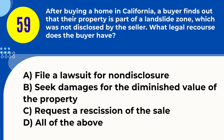Question 59. After buying a home in California, a buyer finds out that their property is part of a landslide zone which was not disclosed by the seller. What legal recourse does the buyer have? A. File a lawsuit for non-disclosure B. Seek damages for the diminished value of the property C. Request a rescission of the sale D. All of the above. Answer: D. All of the above. Explanation: Non-disclosure of a landslide zone can lead to legal action, seeking damages, or rescinding the sale.